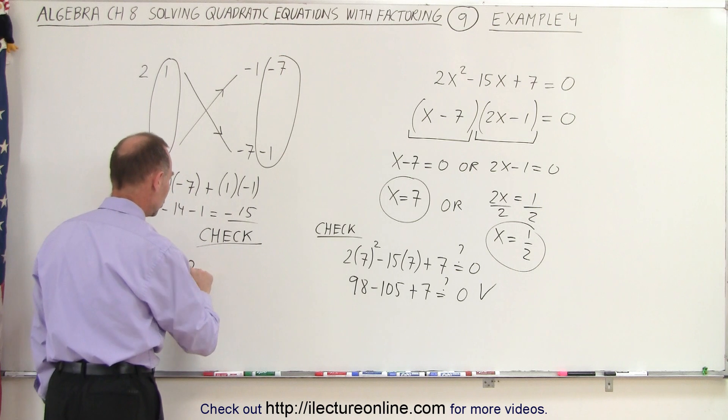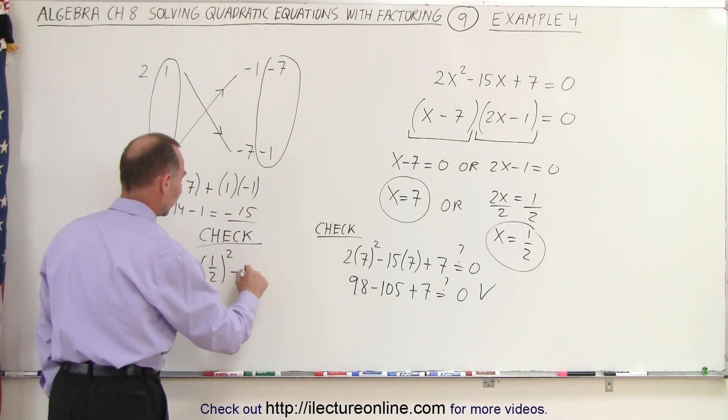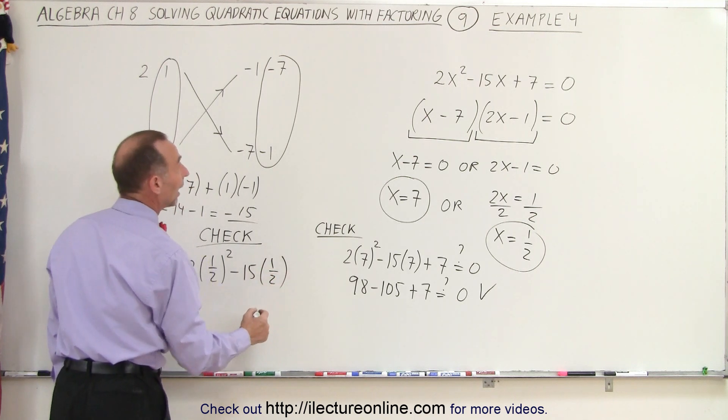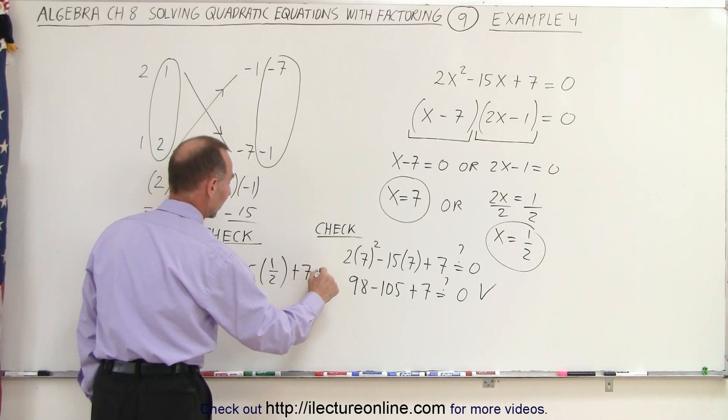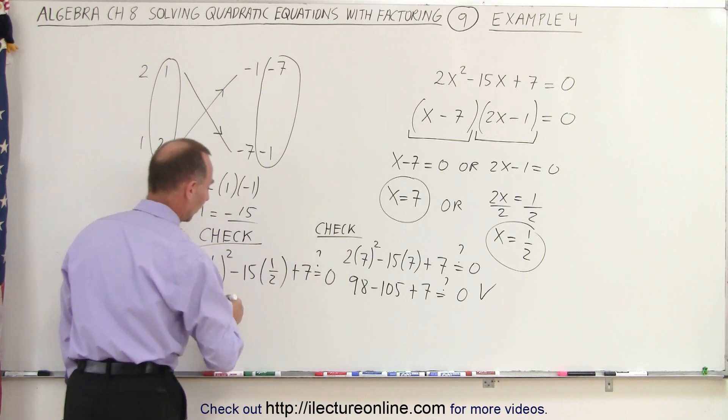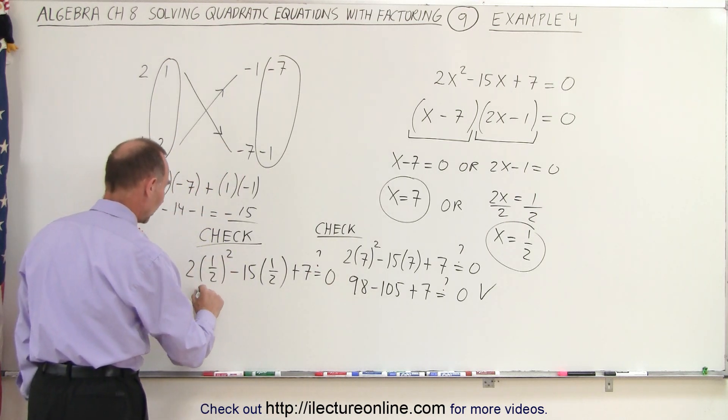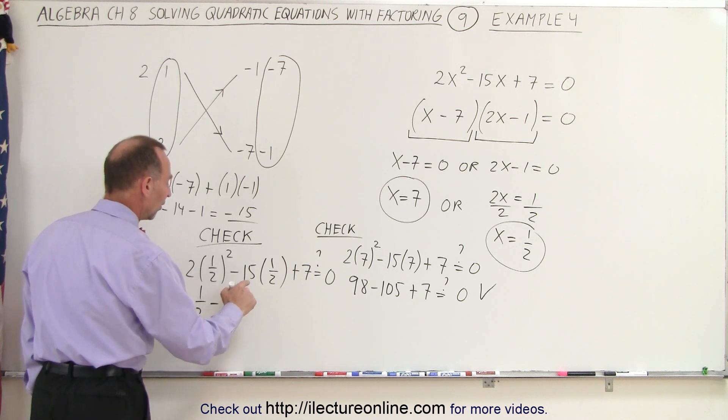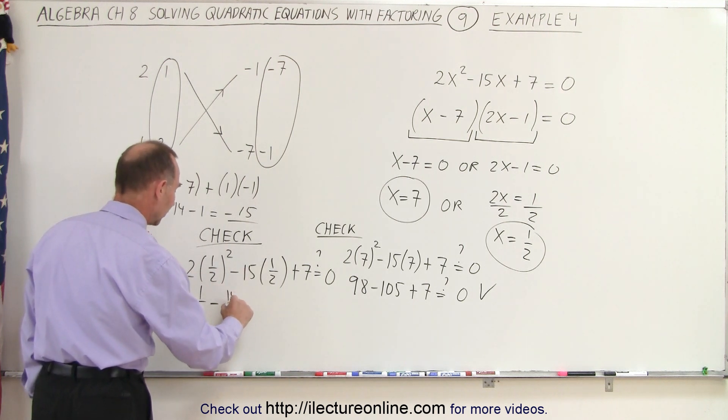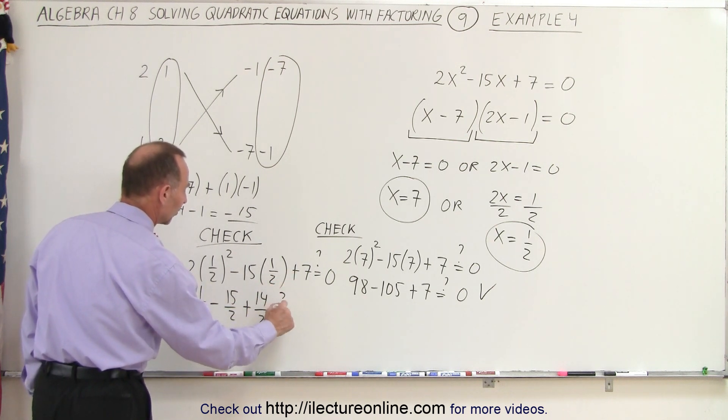So here we have 2 times 1 half squared minus 15 times 1 half and then plus 7. Is that equal to 0? So 1 half squared is 1/4 times 2 is 1/2 minus 15 times 1 half plus 7. Now 7 can be written as 14 over 2.